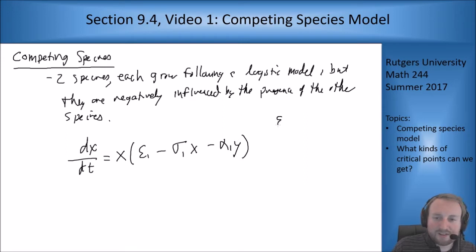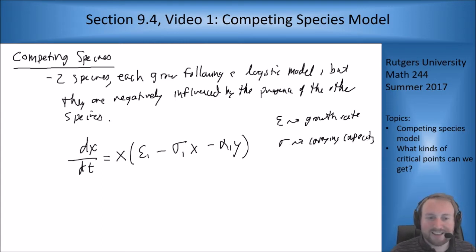The thinking here is that epsilon is something like our normal growth rate. Sigma is going to factor in the carrying capacity, because the logistic model is dx/dt equals rx times 1 minus x over k. So in some sense the sigma is incorporating the carrying capacity into the equation and then alpha is going to determine how much they interact, some sort of interaction parameter.